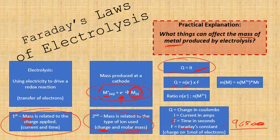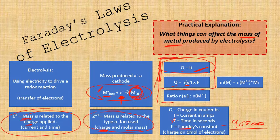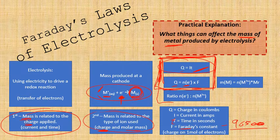The ratio of number of moles of electrons to the mass is very important, so being able to ratio properly is key. And then obviously finding the mass using number of moles times molar mass is going to be important as well. These two equations — Q = It and Q = nF — are really the new ones, and we're going to look at an exam-style question to show how to use them.